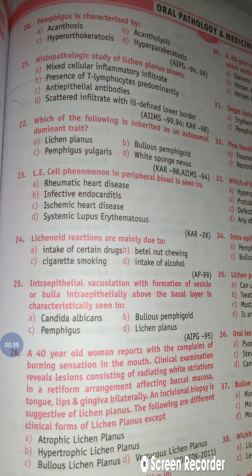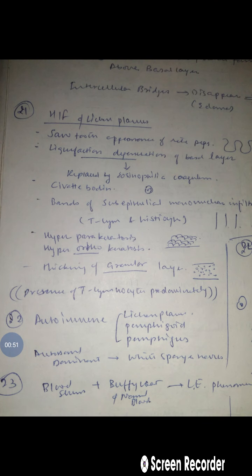Question 21 is asking about the histopathological study of lichen planus. The histopathological features are: saw-tooth appearance of rete pegs, liquefactive degeneration of the basal layer, civatte bodies (also called hyaline bodies, colloid bodies, or fibrillar bodies), and bands of subepithelial mononuclear infiltrate. These bands contain T-lymphocytes predominantly, along with histiocytes. There is also hyperparakeratosis or hyperorthokeratosis and thickening of the granular layer.